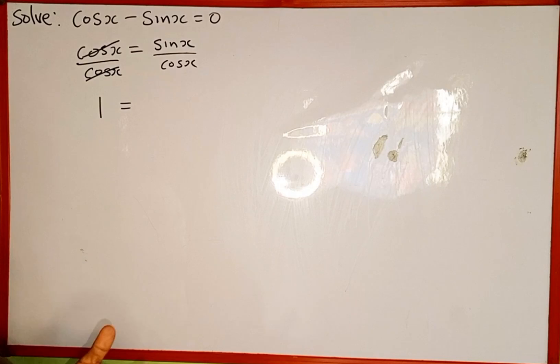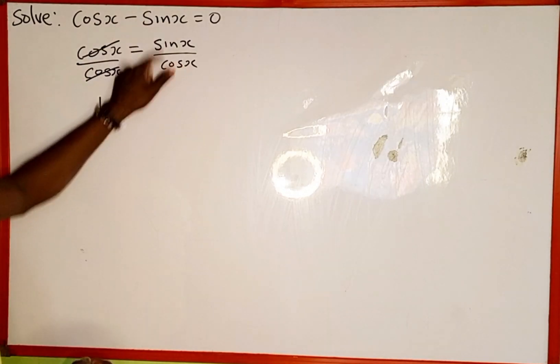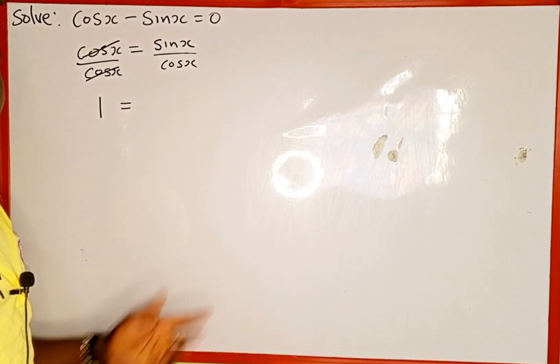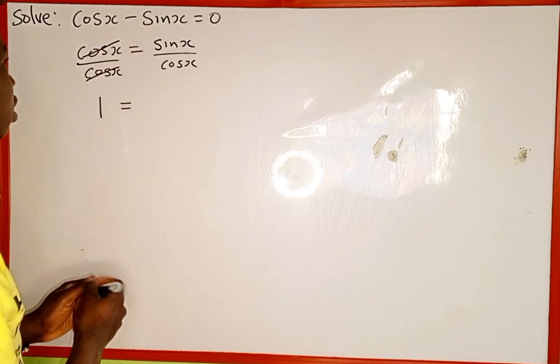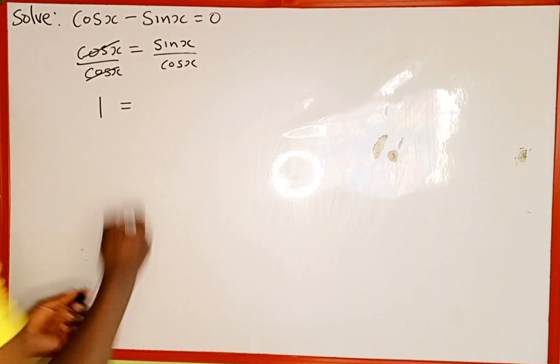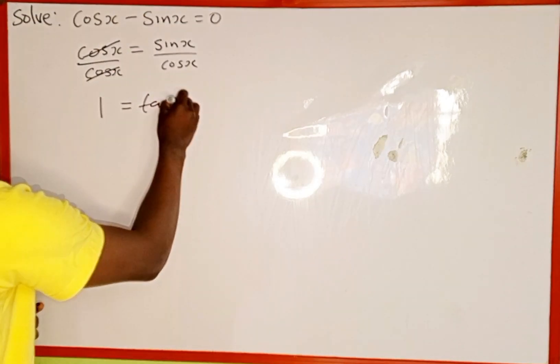Let's recall from trigonometry identity, sin x over cos x is the same as tan x. So we can replace tan x in place of sin x over cos x. So this is going to be tan x.